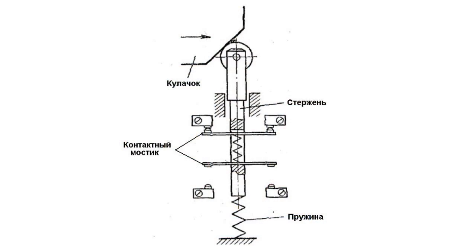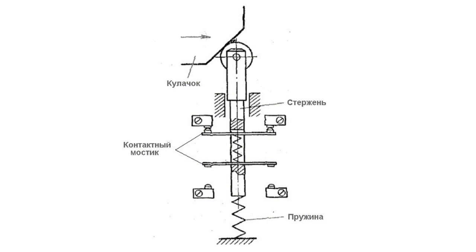The position switch has a rather simple design. It is a rod with two contact bridges fastened. These bridges switch the electric circuits. If the rod is pushed down, upper contacts will get open, while lower contacts will close. The spring brings the rod into the initial position.